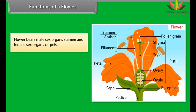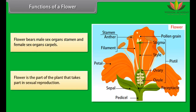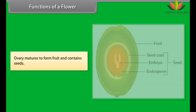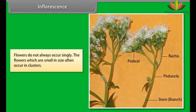Unisexual flowers are flowers that bear either stamen or pistil. Examples include papaya and watermelon. Bisexual flowers are flowers that contain both stamen and pistil; they are termed bisexual or hermaphrodite. Examples include pea, hibiscus, and mustard.